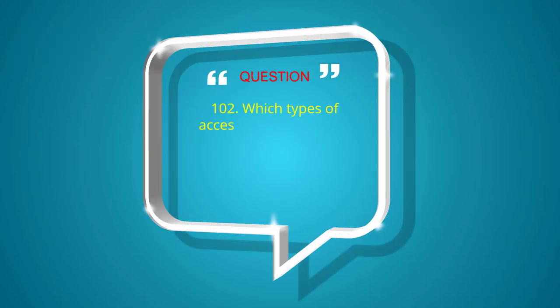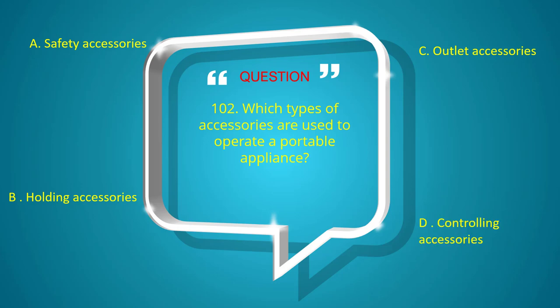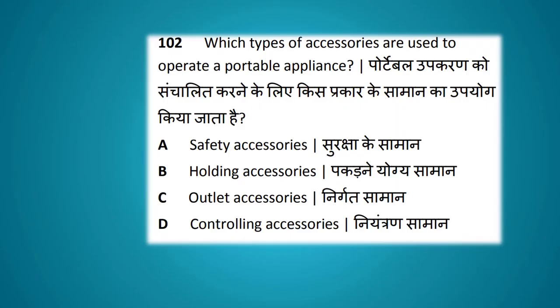Which type of accessories are used to operate a portable appliance? Options: safety accessories, holding accessories, outlet accessories, controlling accessories. The answer is outlet accessories.